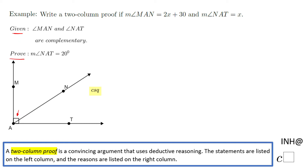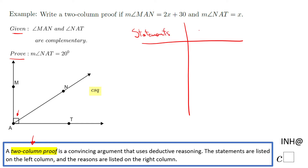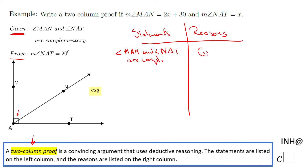Something is given and we need to prove something, and for that reason we can use what is called a two-column proof, which looks like this — two columns. On one column we're going to put statements and on the other one we write reasons. You always start with what is given — in this case, angle MAN and angle NAT are complementary.